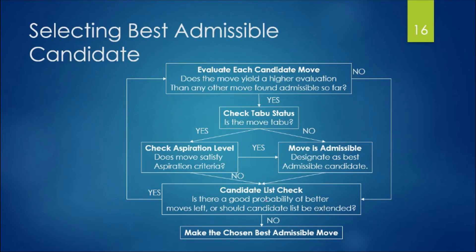Check whether there is a good probability of better moves left or whether the candidate list should be extended. If yes, evaluate each remaining candidate; if no, accept the currently chosen best admissible move as the next move.